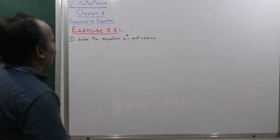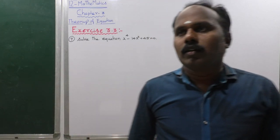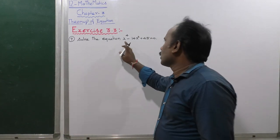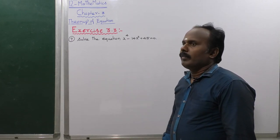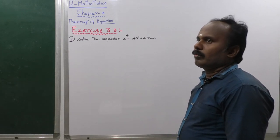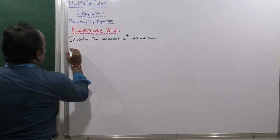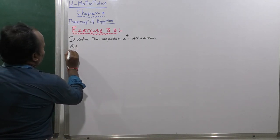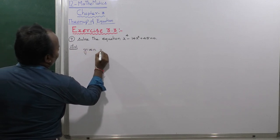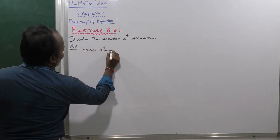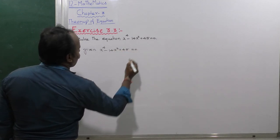The given equation is x power 4 minus 14 x square plus 45 is equal to 0. This is a quartic equation, so we get four solutions.